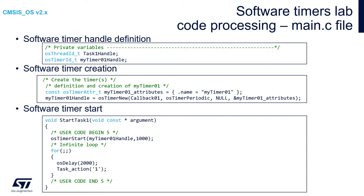Then we need to start the software timer manually. In our example we will use the task1 function body. Within the startTask1 function, in its initialization part, we will start our software timer with a period of 1000 ms using the function osTimerStart. Within the endless loop of the task1 function body, please put two operations: send the task for 2 seconds into blocked state using osDelay, and execute the task action function - in our case it will be sw_data_send. The remaining part of the code for the software timer callback will be covered on the next slide.